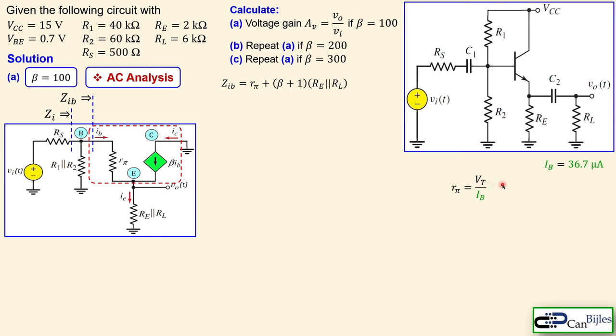For beta equals 300, using the same IB formula with the new beta value gives a new base current. The collector current is calculated using beta times IB, and the emitter current using (beta + 1) times IB. Checking VCE with the new emitter current gives 7.02 volts — again much larger than 200 mV — confirming the BJT remains in the linear region of operation.